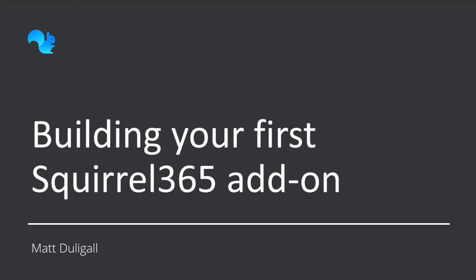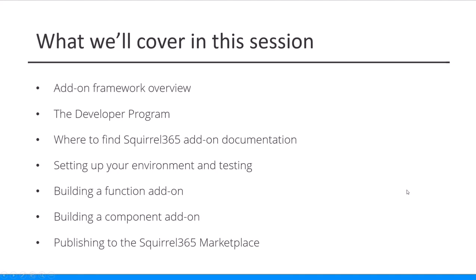Thank you, Donald. Welcome everyone to the webinar today. What we're looking at is building your first Squirrel 365 add-on. What we're going to cover in this session: a very brief overview of the framework, then the developer program and how you get signed up, then the Squirrel 365 add-on documentation — where you can get it and how to navigate it. Then we'll look at setting up your environment and testing, look at the internals of building a component, discuss the differences between a function component and a visual component, try to get a full component built, and then go through publishing it to the Squirrel 365 marketplace.